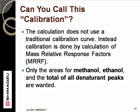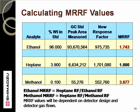In the calculation of results, it is necessary to obtain area values for methanol, ethanol, and for the sum of all other peaks as denaturant. The calculation of MRRF values is quite easy: the peak area from the analysis is divided by the weight percent to give the response factor. The response factor for heptane is divided by the response factors for ethanol and methanol respectively. The typical values from the method are 3.2 for methanol and 2.06 for ethanol.